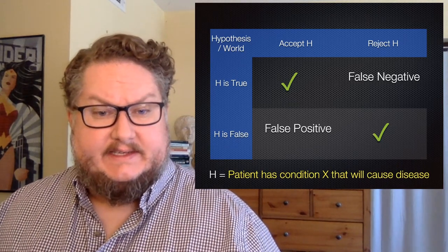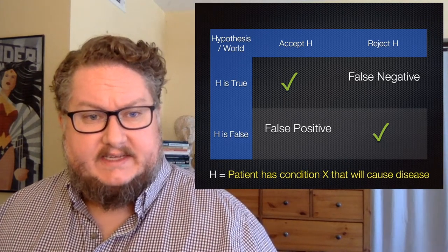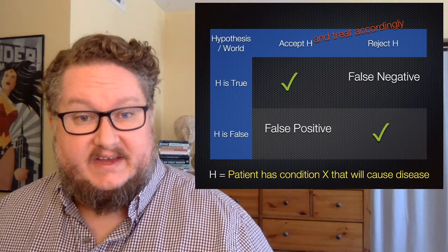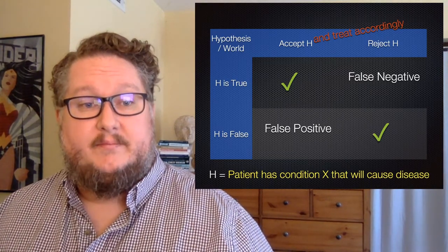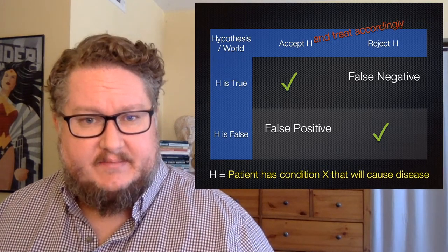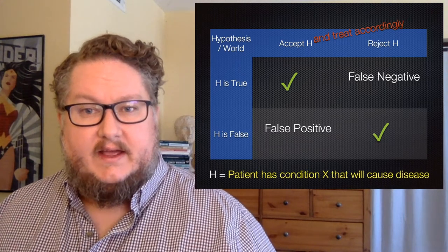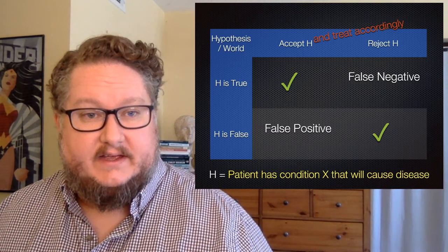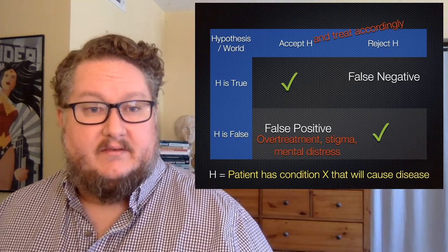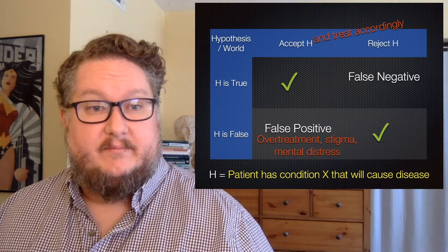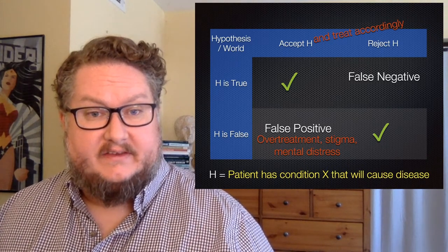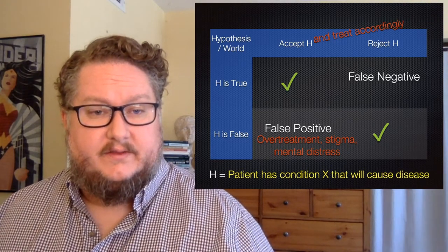The assumption is that this test, in many cases where treatment is available, is going to lead to certain treatment decisions. Whenever we accept the hypothesis that the patient has the disease or the condition that will cause disease, we presume we're going to treat accordingly — some kind of treatment decision will be made on the basis of that information. We have the same kinds of inductive risk issues here. If you have a false positive error, there are risks of overtreatment, stigma if the disease carries social stigma, and the mental distress of being told you have a disease when you don't. These are consequences of a false positive error.